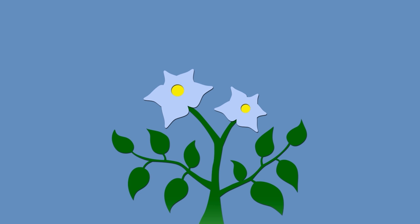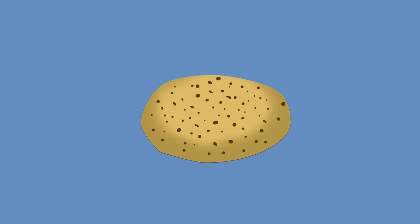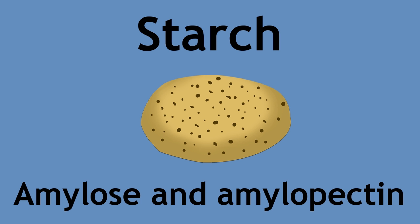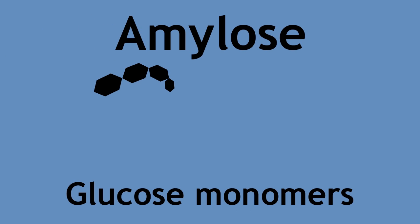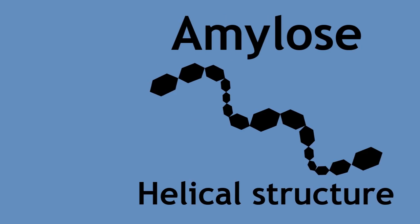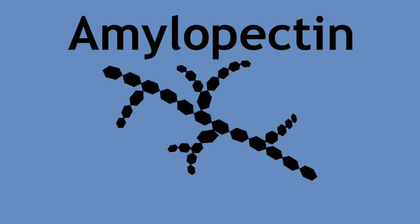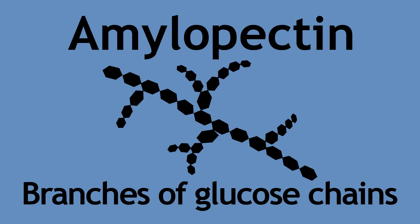Let's now look at the potato itself — it is very starchy. Starch is actually a combination of amylose and amylopectin. Amylose is also made of glucose monomers and has a helical structure. Amylopectin, on the other hand, is like amylose but has branches of glucose chains.